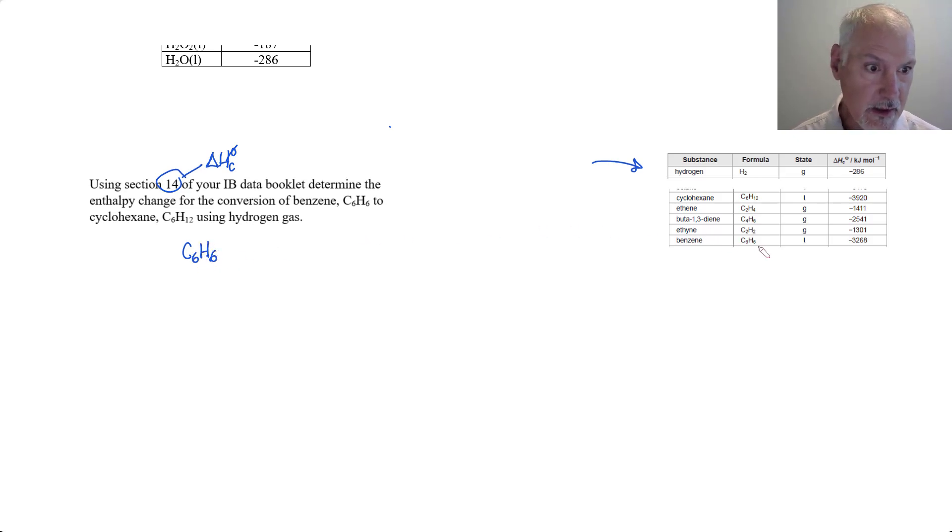We start with benzene, C6H6, and it's a liquid from the data booklet. We're using hydrogen gas and converting that into cyclohexane, C6H12, which is also a liquid at room temperature. To balance that would require three hydrogens.